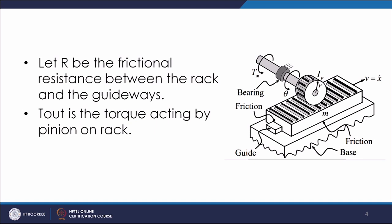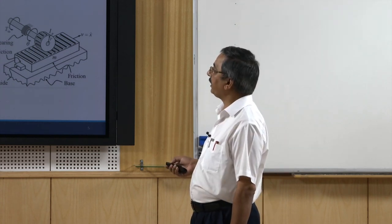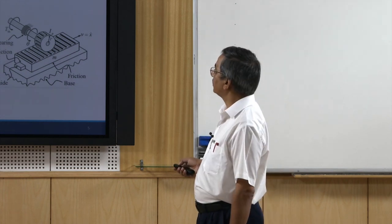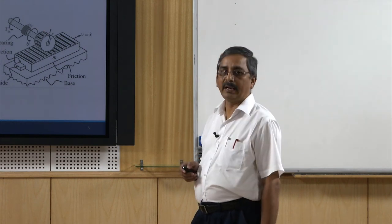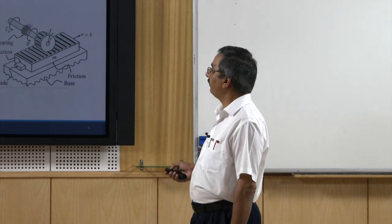With these parameter definitions, we can write system equations for the pinion and the rack separately, then combine them. The net torque acting on the pinion is T_in minus T_out, and this net torque is responsible for the angular acceleration of the pinion. So this net torque equals I_p times alpha, where alpha is the angular acceleration of the pinion.